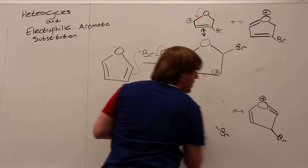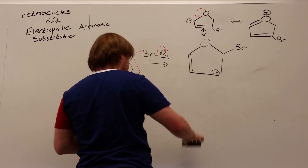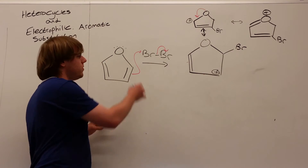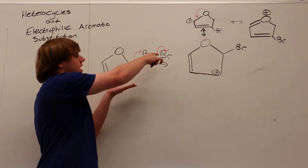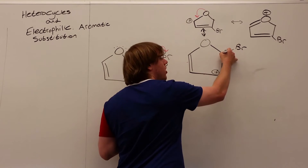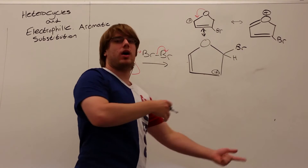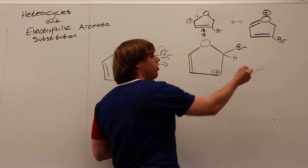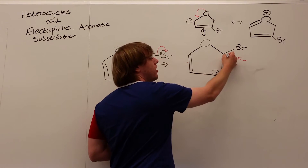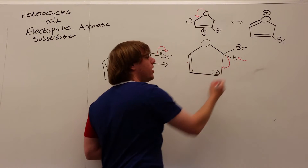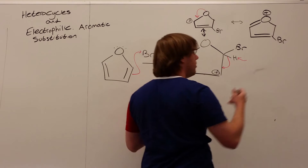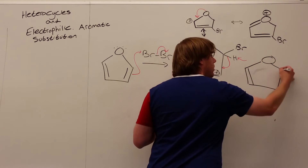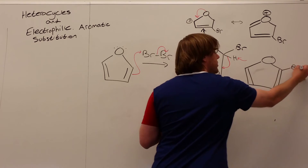So we're not going to consider the bottom — we consider the top one. To finish the mechanism: we go to the carbon where the group was added, there should be a hydrogen there. Some base — we don't really care what — will pull off that hydrogen. The bond of the hydrogen goes to where the double bond will form. So you'll get your final product of the furan with the bromine added to that position.